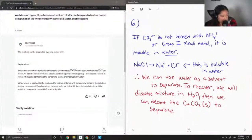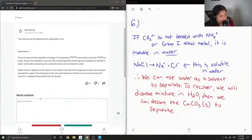So when water is applied to the mixture, the sodium chloride will completely ionize in the solution, leaving the copper-2-carbonate as the only solid particles. All there is to do is to decant the solution to separate the solids from the liquids. The solution is correct.